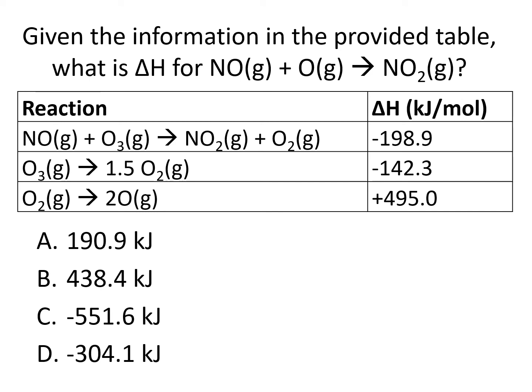Given the information in the provided table, what is delta H for NO gas plus O gas yields NO2 gas? The reaction NO gas plus O3 gas yields NO2 gas plus O2 gas has a delta H of negative 198.9. Reaction O3 gas yields 1.5 O2 gas has a delta H of negative 142.3. The reaction O2 gas yields 2O gas has a delta H of positive 495.0. Remember, some parts of these equations will just be there to cancel out — make sure you're looking for things to be on the correct sides of the equations and have the correct coefficients.